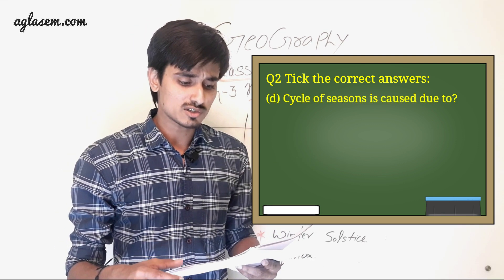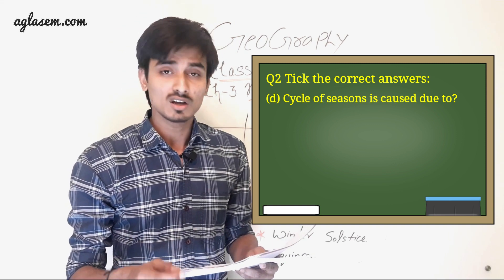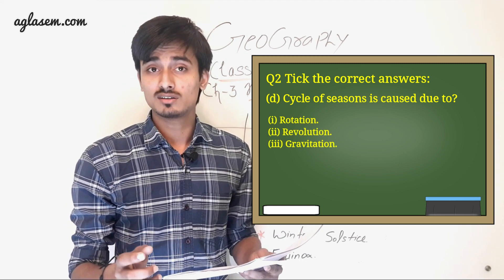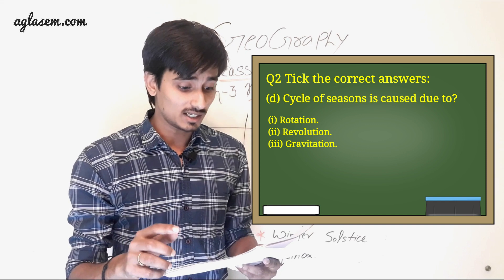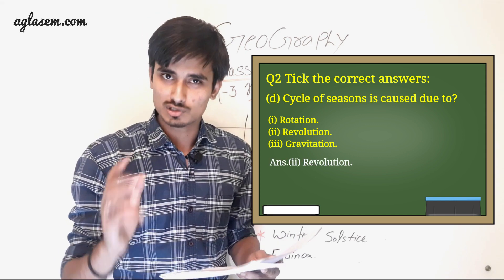D. Cycle of seasons is caused due to. Options are: First, rotation. Second, revolution. And third, gravitation. So answer is revolution.